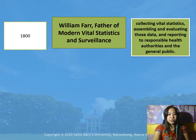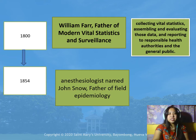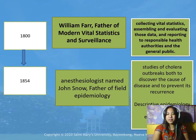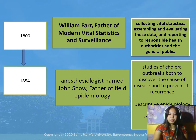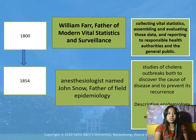In 1854, John Snow became the father of field epidemiology because of his work. He studied cholera outbreaks, leading to the discovery and prevention of its occurrence. He considered both descriptive epidemiology and analytical epidemiology to come up with prevention strategies and identify different causes.